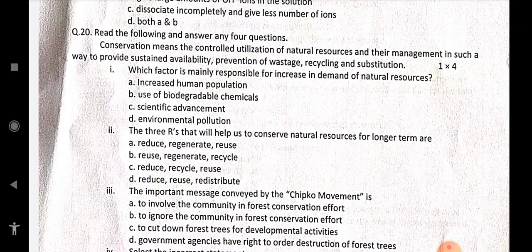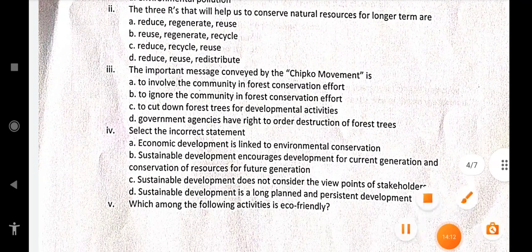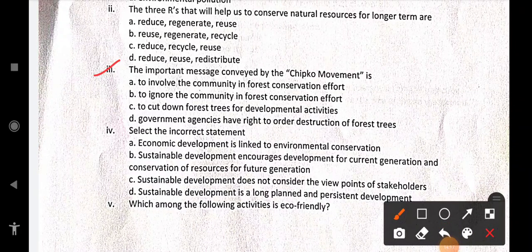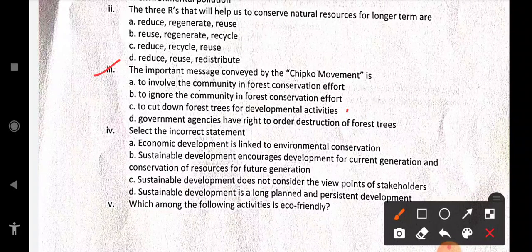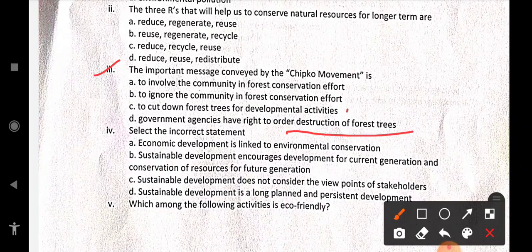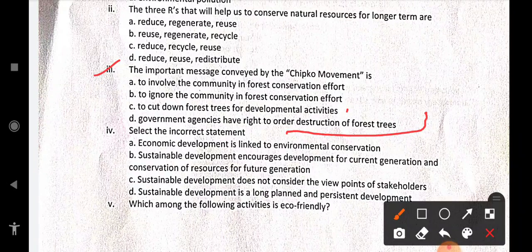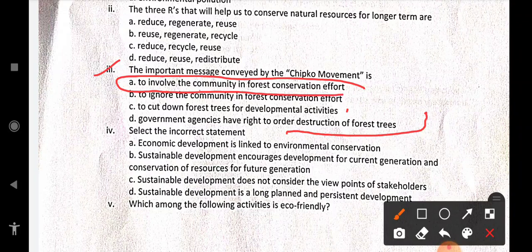The important message conveyed by the Chipko movement is to involve the community in forest conservation effort, to ignore the community in forest conservation effort, to cut down forest trees for development activities. Government agencies have right to order destruction of forest trees. The answer is to involve the community in forest conservation effort.